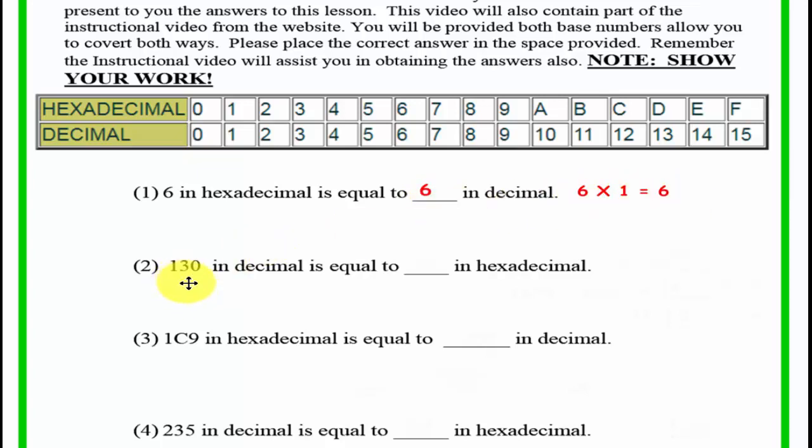The next one, problem 2, we have 130 in decimal, and what is it equal to in hexadecimal? Well, here you take 130 divided by 16. 16 times 8, because it goes in there 8 times, is 128. 130 minus 128 is 2, so you have a remainder of 2, and 16 can't go into 8, so your answer is 82.